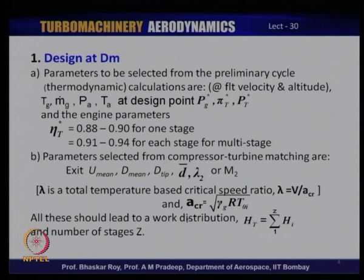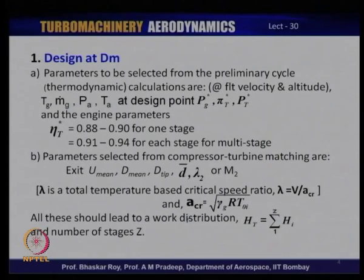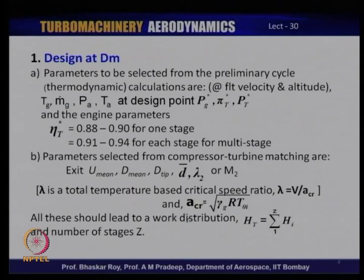The efficiency values used here are ball-park figures to start the design process. For a single-stage turbine, efficiency of the order of 88 to 90 percent is often possible, likely for a high-pressure ratio axial flow turbine. For a multi-stage turbine, individual stage efficiencies are on the higher side, with the overall multi-stage efficiency around 90 percent, while individual stage efficiencies nowadays could be as high as 94 percent.